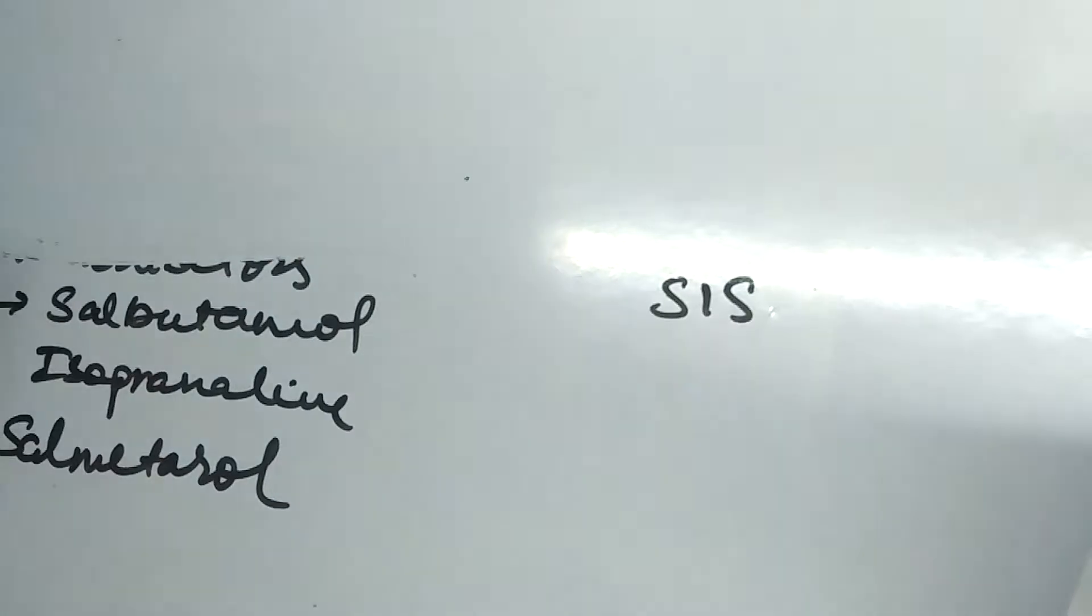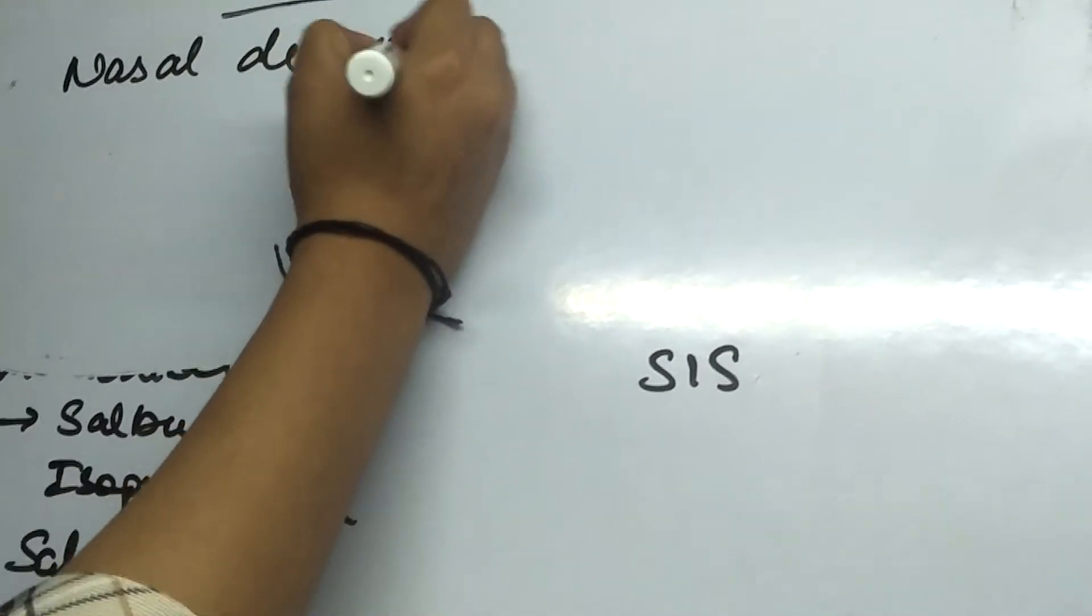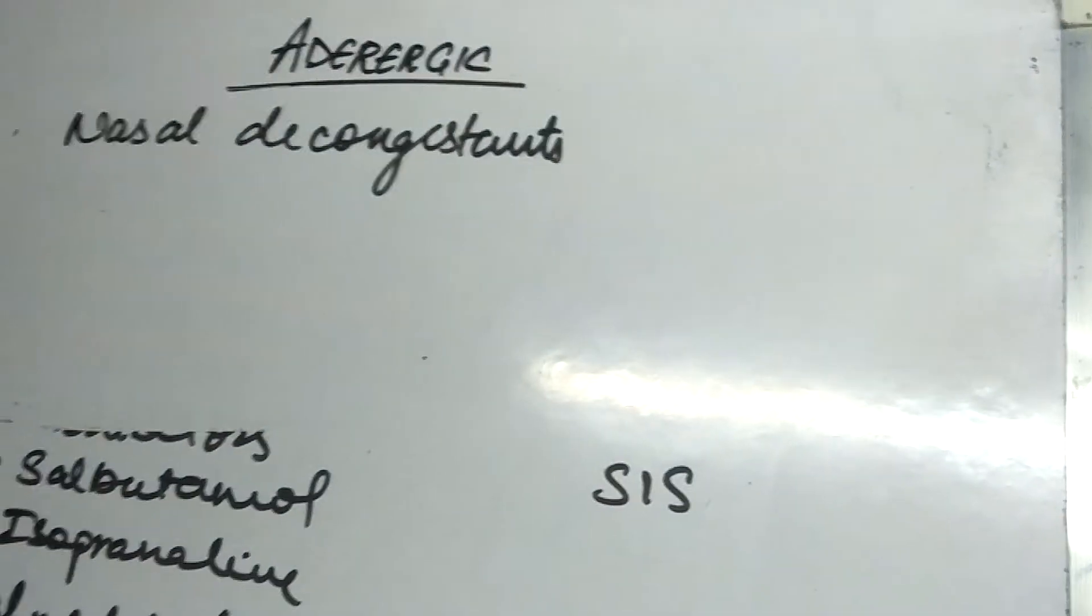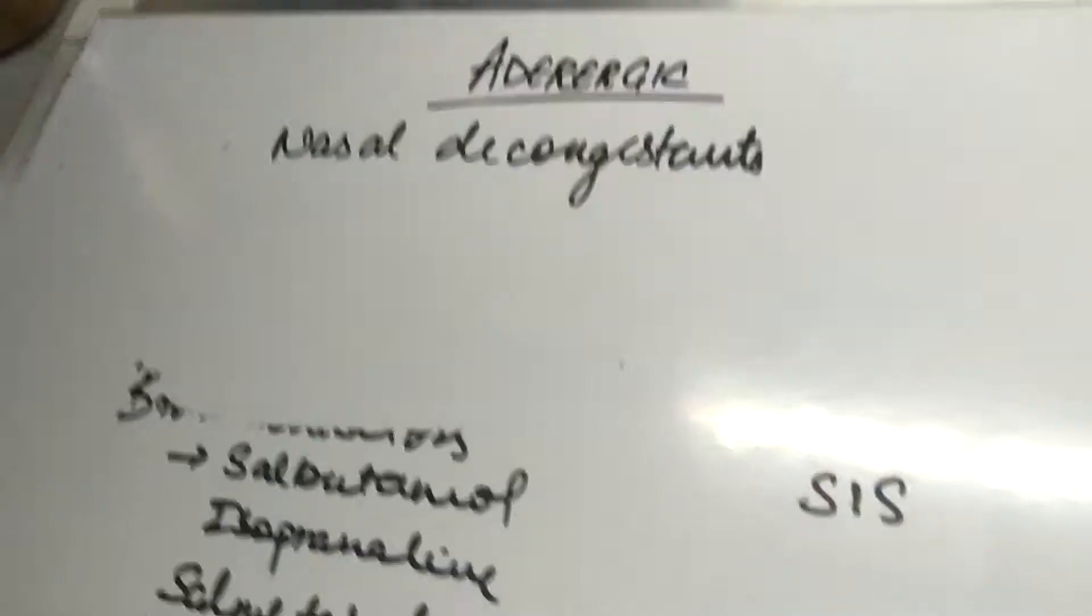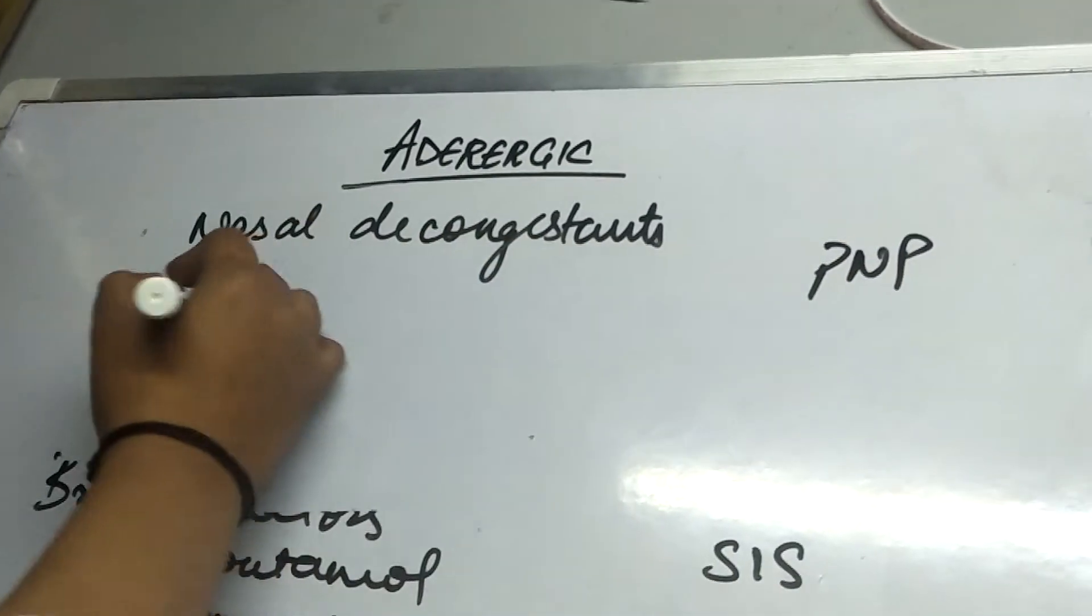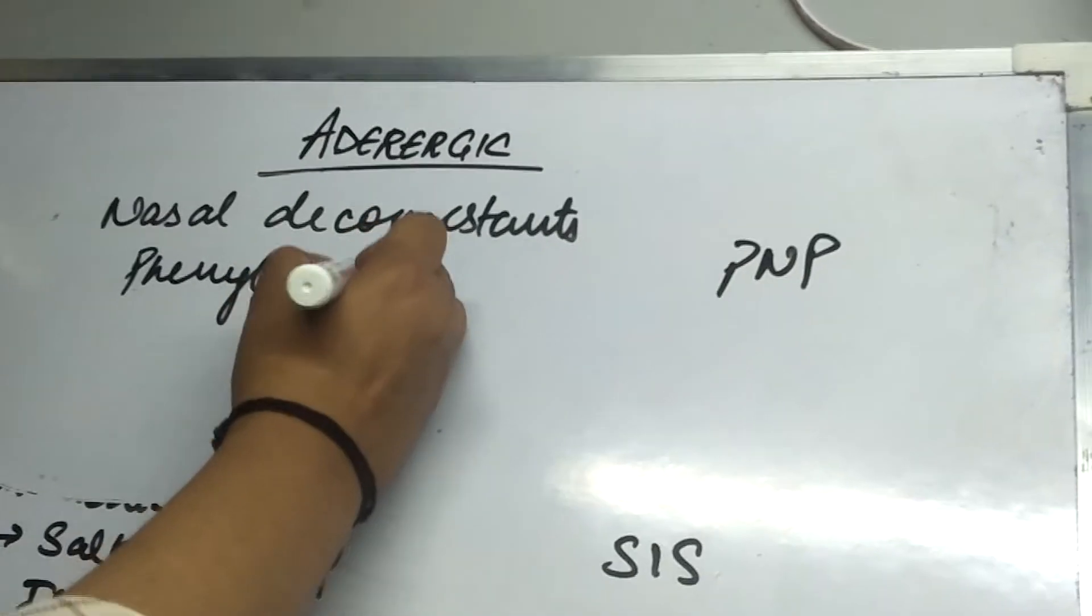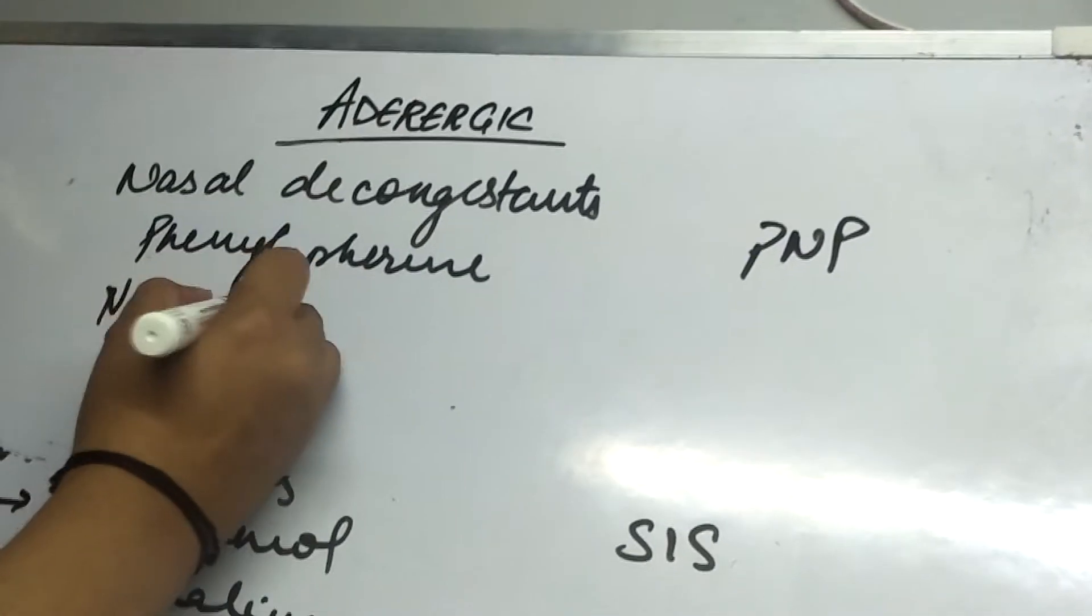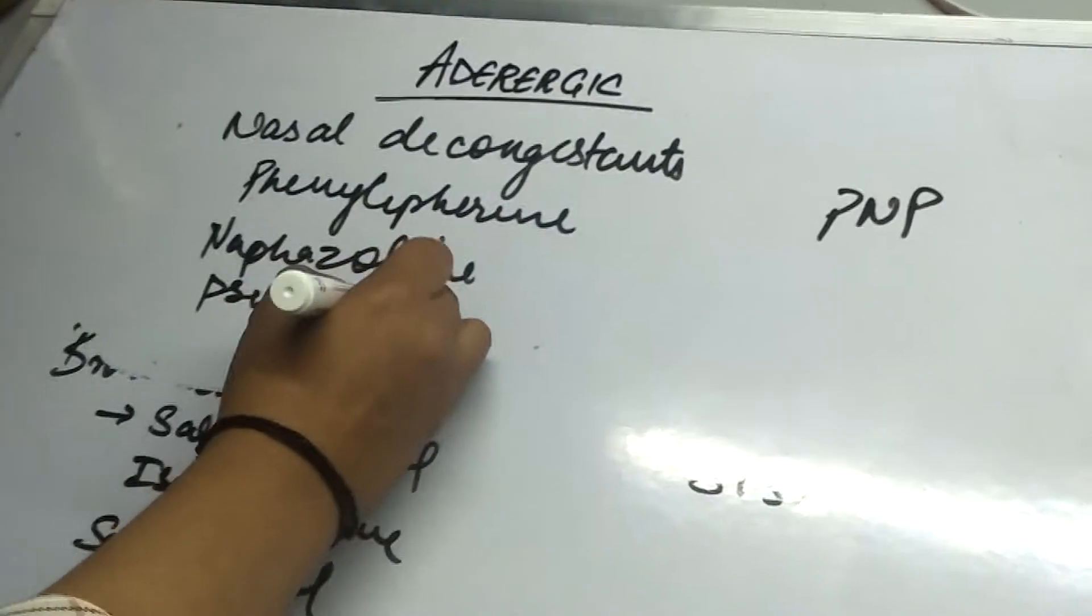Next comes the nasal decongestants. The mnemonic can be PNP. From P it is phenylephrine, from N it is naphazoline, and from P it is pseudoephedrine.